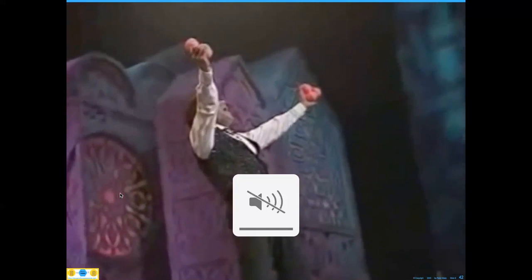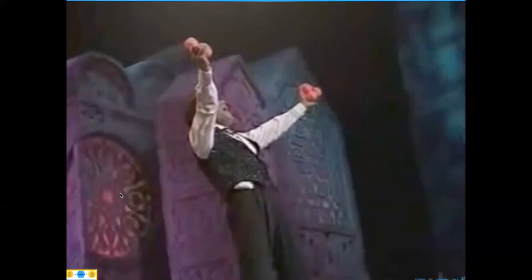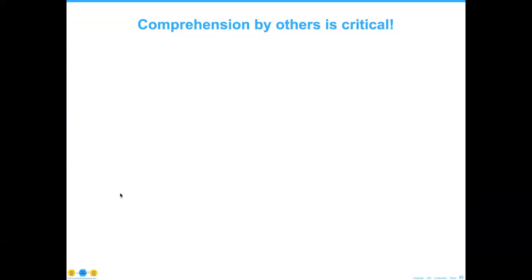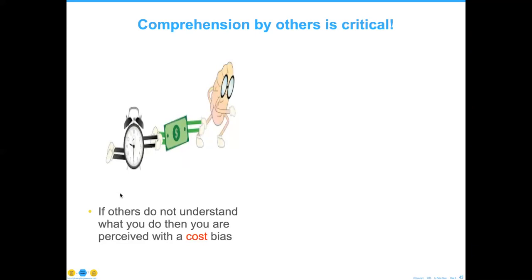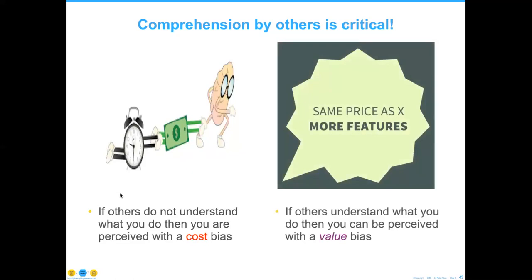Can you imagine how much time and effort your knowledge workers are spending learning this stuff on their own instead of learning from a base set? One of the most important aspects of working in an organization is to make sure that others understand what you do — because there's a natural bias that if I don't understand what you do, I perceive you from a cost perspective. Whereas if I understand what you do, I'm more likely to perceive you with a value perspective.